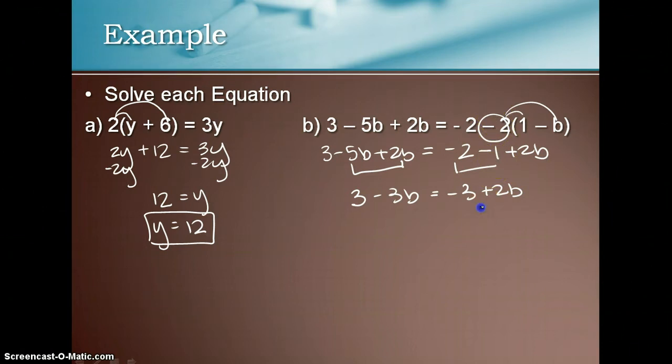So you can subtract 2b from both sides. That gives us 3 minus 5b is equal to negative 3. Subtract 3 from both sides. That gives us negative 5b is equal to negative 6.